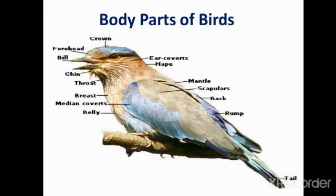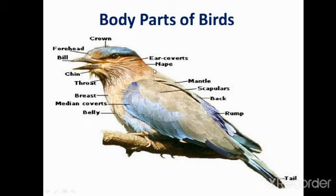Before starting the chapter, we will learn about the body parts of birds. First is Crown — this is called Crown, meaning Head. You can see this is Forehead. Bill means Beak. You can see Chin, meaning Thudhi. Throat means Gala. Breast. Median Covers. Belly means Peet. Ear Covers. Neb means Gardan, that we call Neck.